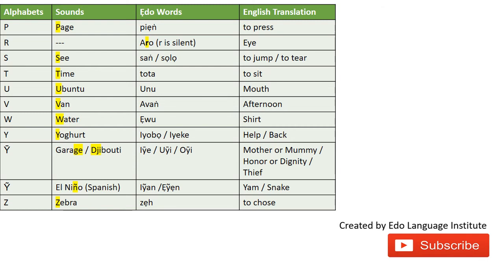For the T sound, we have 'TA' meaning to sit or sit down. For the U sound, as in 'ubuntu,' we have 'UNU' which means mouth. For the V sound, we have 'AVA' which is the word for afternoon.